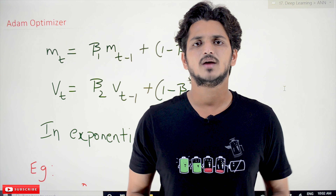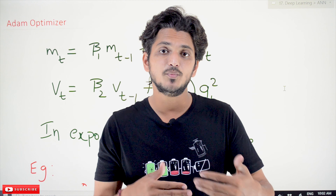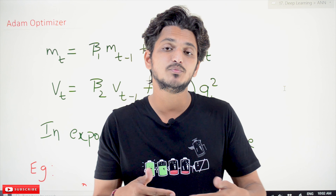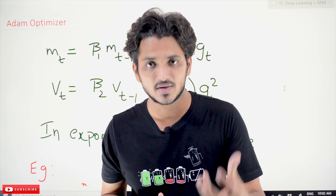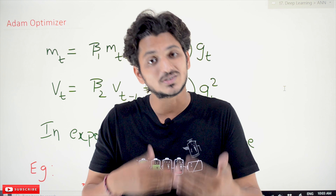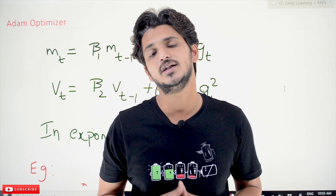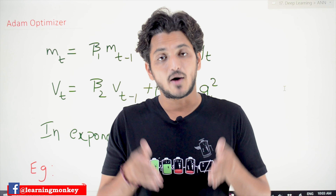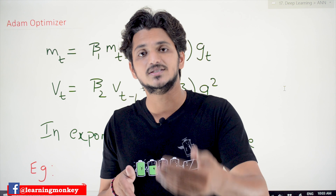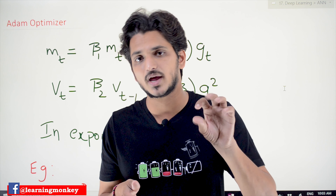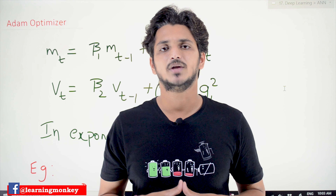Let's refresh the concepts we discussed in our previous classes. Stochastic Gradient Descent with Momentum — what we have done here is we added a momentum term by taking Exponential Weighted Averages. With this momentum term, the benefit we got is that our convergence is going as fast as Gradient Descent. That is the benefit of Stochastic Gradient Descent with the Momentum term.